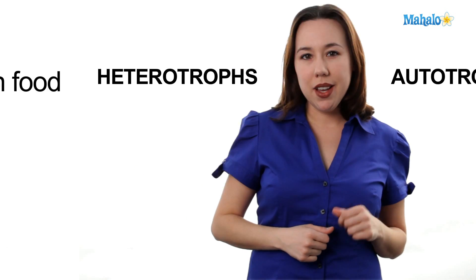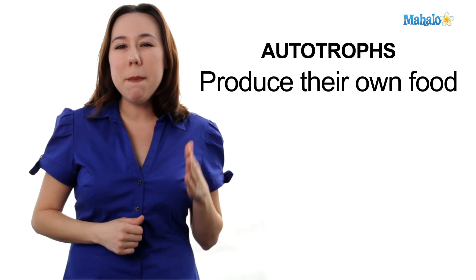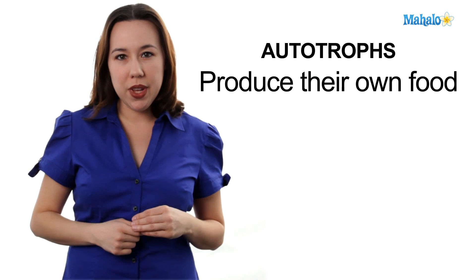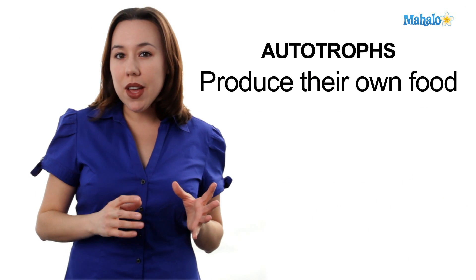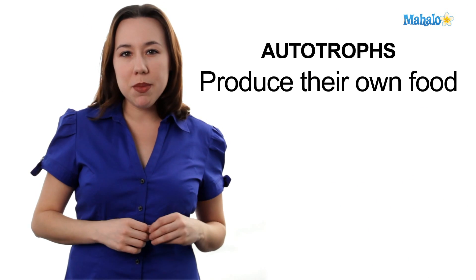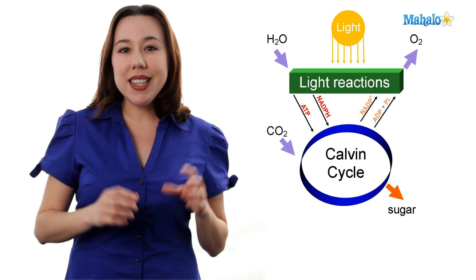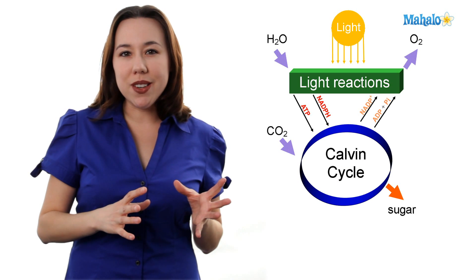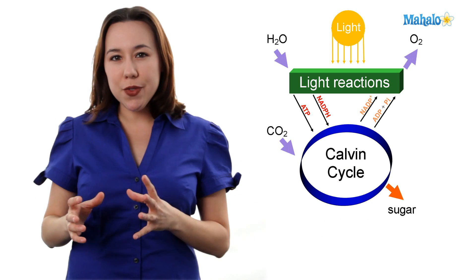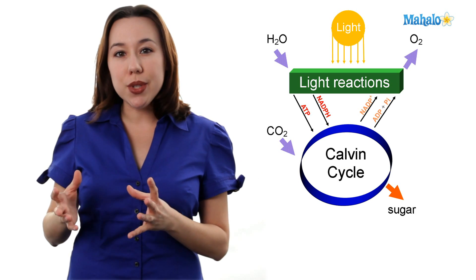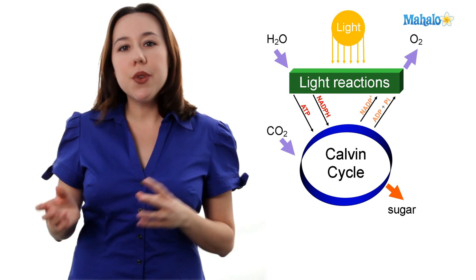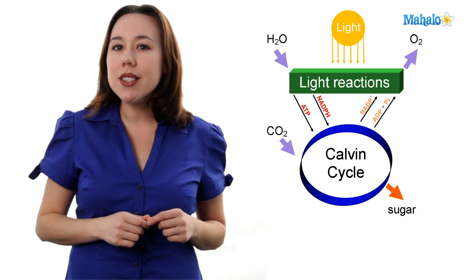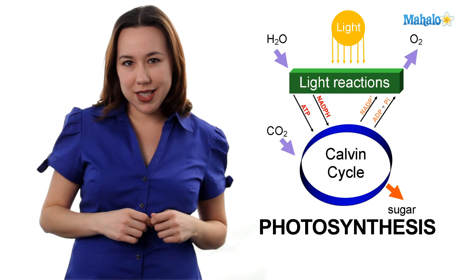Let's start with autotrophs. Autotrophs make their own food. They get their energy directly from the sun. They take the solar energy and they transfer it into glucose, a sugar, through a complex process called photosynthesis.